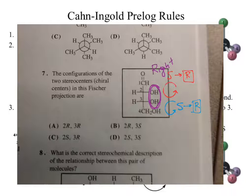The way chirality is determined in a Fisher projection is you're looking at that left-right axis—one of the things that's nice within the Fisher projection. That processing could probably get done in about a minute, a minute and a half. You have to go fast, but you should be able to do that in about that time.